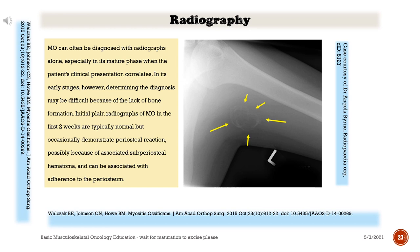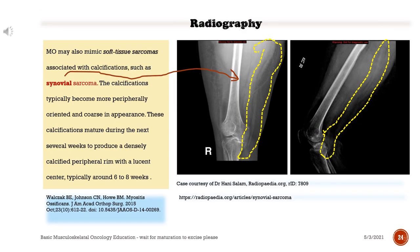Radiography. Myositis ossificans can often be diagnosed with radiographs alone, especially in its mature phase when the patient's clinical presentation correlates. In its early stages, determining the diagnosis may be difficult because of the lack of bone formation. Initial plain radiographs in the first two weeks are typically normal but occasionally demonstrate periosteal reaction, possibly because of associated subperiosteal hematoma, and can be associated with adherence to the periosteum. Myositis ossificans may also mimic soft tissue sarcomas associated with calcifications, such as synovial sarcoma.